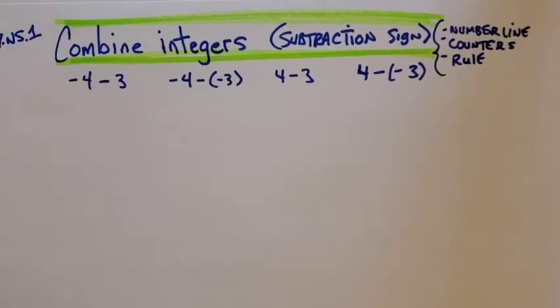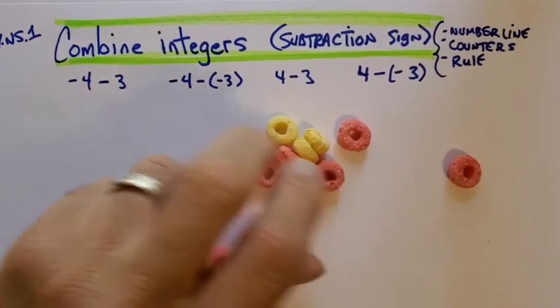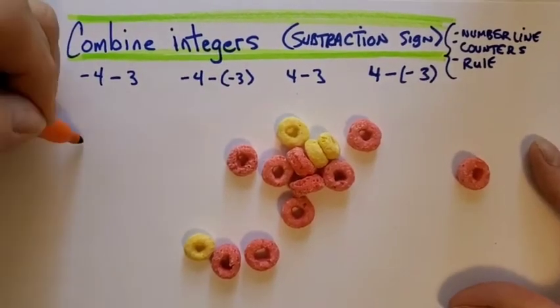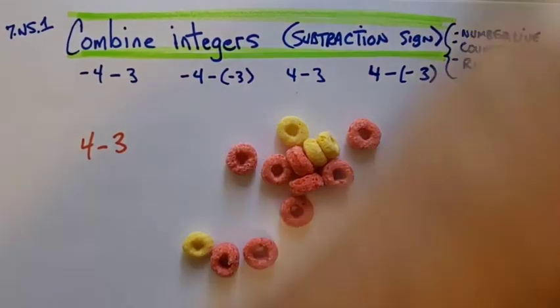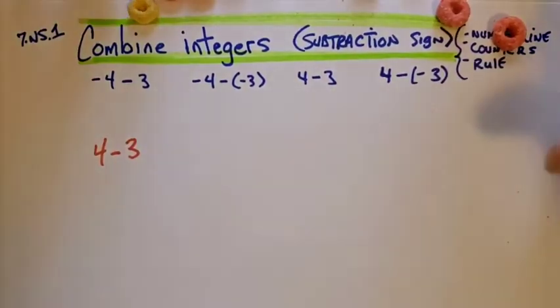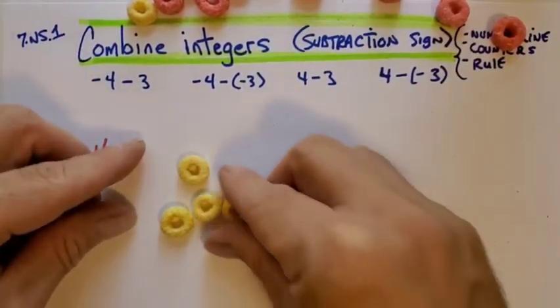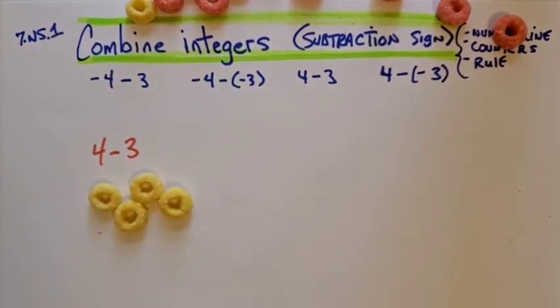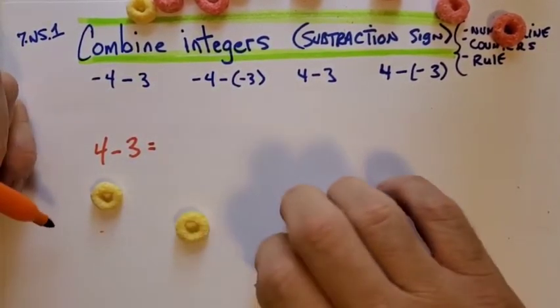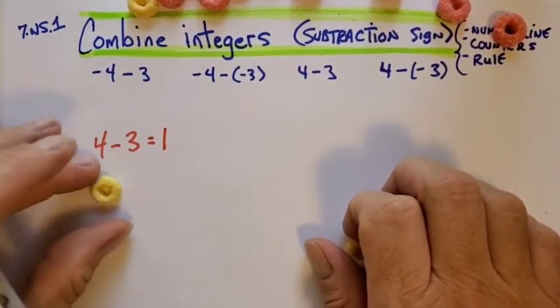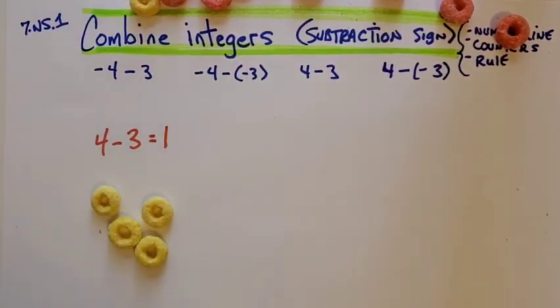I'd like to show you the same types of problems using the counters. Here we go — I'm going to bring out my Froot Loops and show you 4 minus 3. They're both positive values, so here's 4 yellows. From those 4 yellows, we're going to remove 3 yellows. Can we do that? Yes, it's possible. So here are our 4 yellows. We remove 3 yellows. What do we have left? 1 yellow.